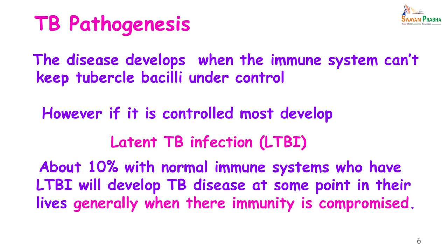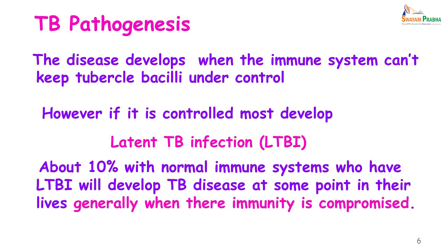So before we go on to the organism, I would like to tell you something about TB pathogenesis. Tuberculosis usually develops when the immune system cannot handle the bacilli and cannot bring them under control. If the immune system does manage to bring the bacilli under control, the patient ends up with what we call LTBI — a latent TB infection.